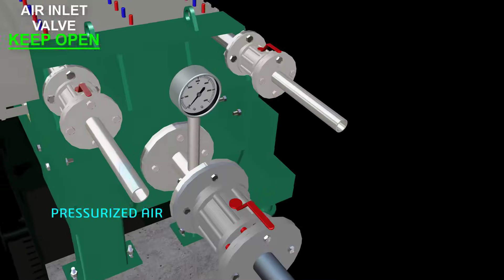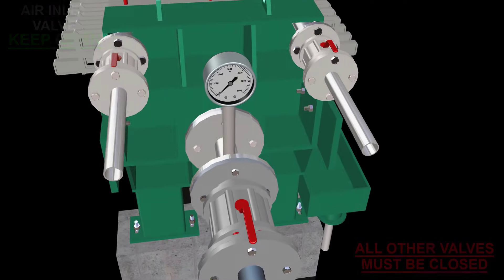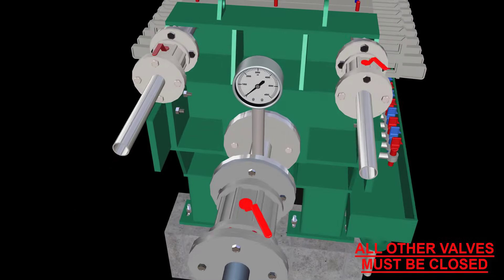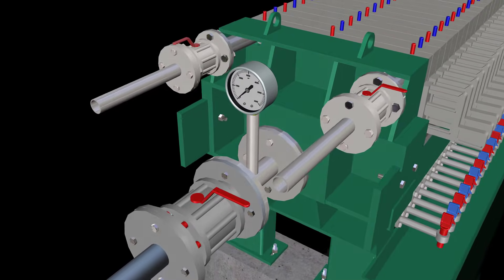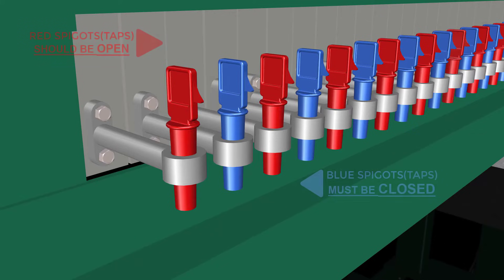In open type of delivery, when we give pressurized air, only air inlet valve and red spigots should be open. All other valves and blue spigots must be closed.